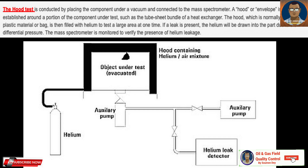The hood test, the third method, is conducted by placing a component under a vacuum and connecting it to the mass spectrometer. A hood or envelope is then established around a portion of the component under test, such as the tube sheet bundle of a heat exchanger. The hood, normally made of a plastic material or bag, is then filled with helium to test a large area at one time. If a leak is present, the helium will be drawn into the part due to differential pressure.